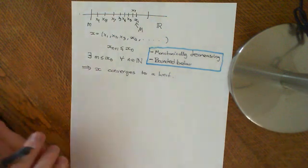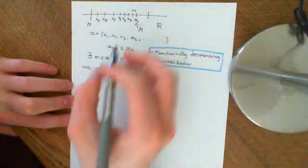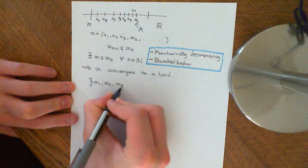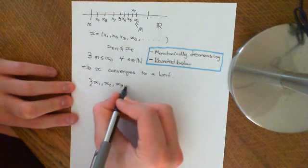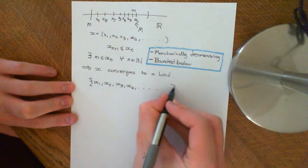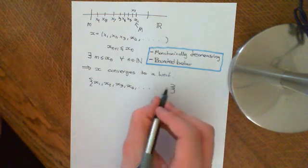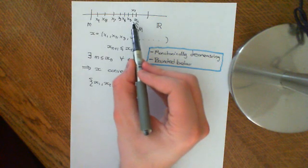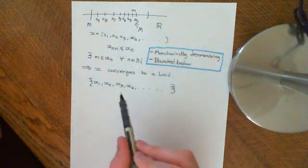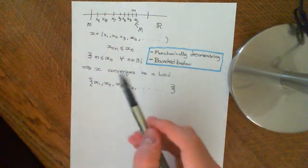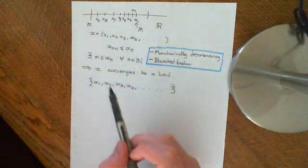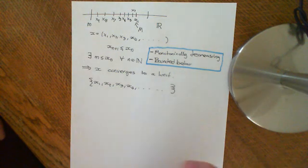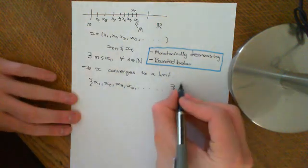So how do I prove this? Well, if the sequence is bounded below, then if I take the set containing all terms of the sequence — x1, x2, x3, etc. — and put them all into this set, that set is going to be bounded. It's going to be bounded above by x1, which is greater than or equal to all the other numbers in this set, and bounded below by this little m, which exists because the sequence is bounded. So this is a bounded set.